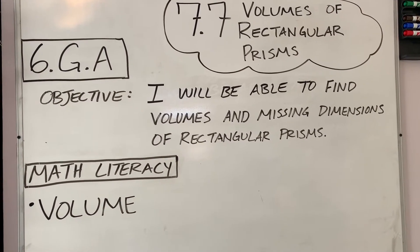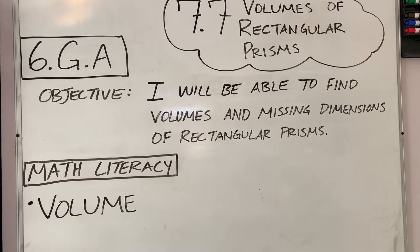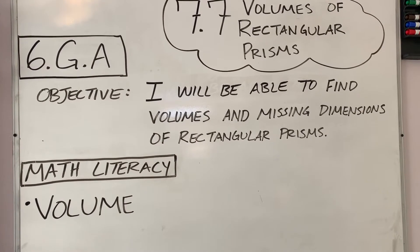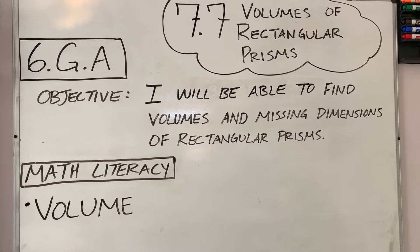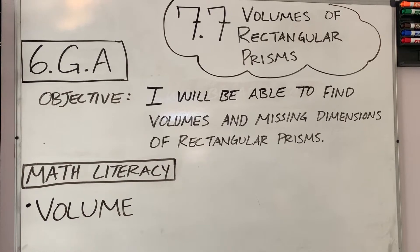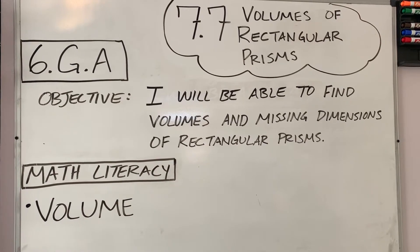Our standard is Geometry A for 6th grade, and our objective is that we're going to be able to find volumes and missing dimensions of rectangular prisms.